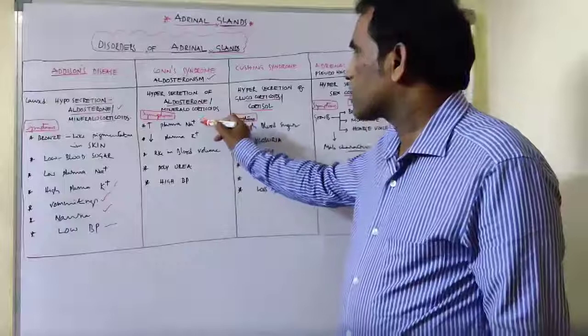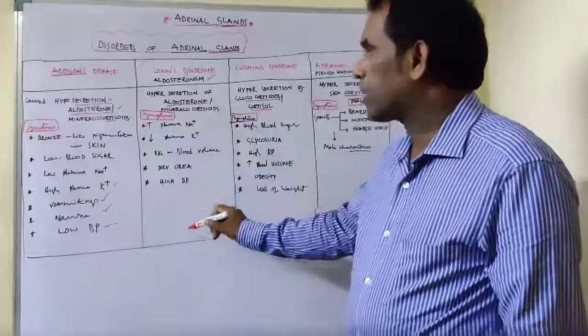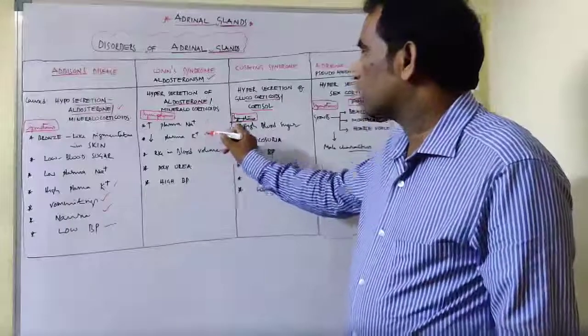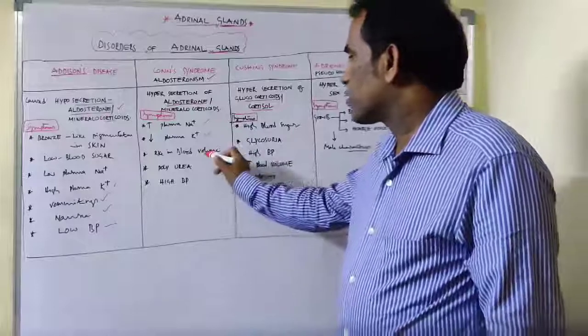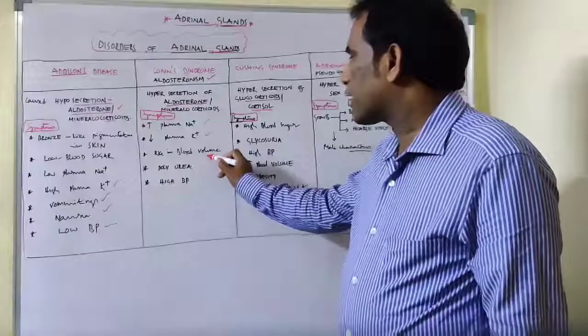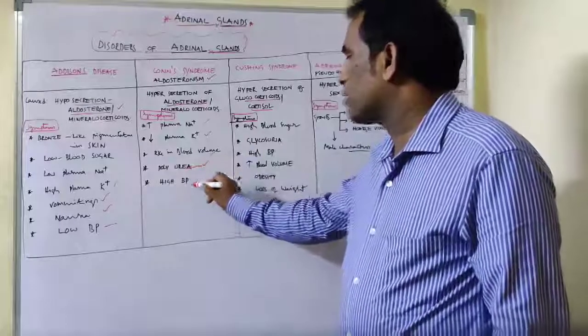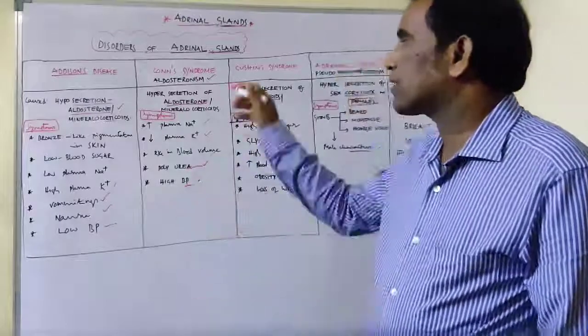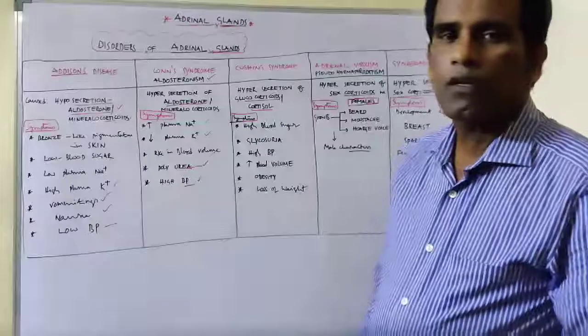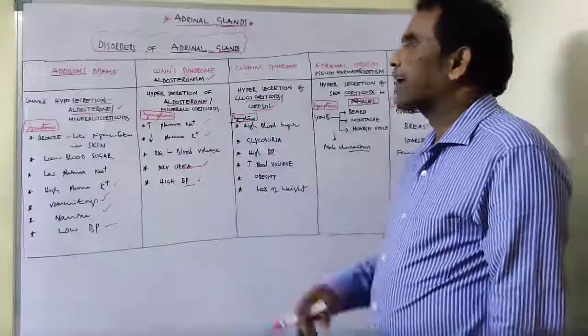The symptoms are almost opposite to Addison Disease: high plasma sodium ions, low plasma potassium ions, rise in blood volume, polyuria, and high blood pressure. These are the signs and symptoms of Conn's syndrome.